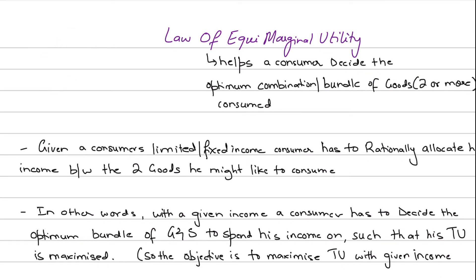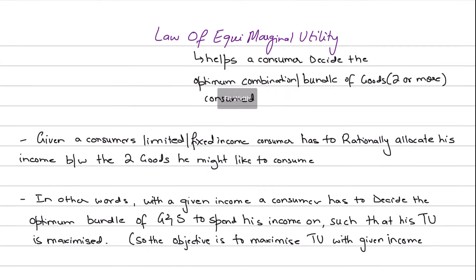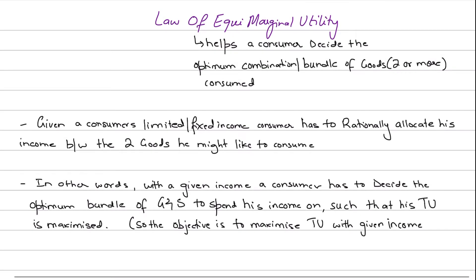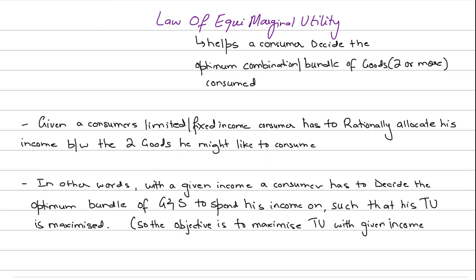The law of equi-marginal principle tells us that a consumer will basically get the highest utility from a given level of income when the ratio of the marginal utilities is equal to the ratio of the prices.